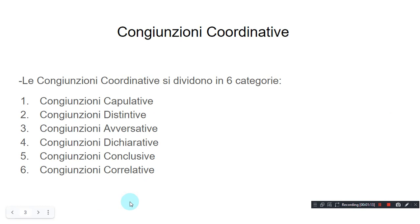Today we're going to be studying congiunzioni coordinative. Le congiunzioni coordinative si dividono in sei categorie: congiunzioni copulative, congiunzioni distintive, congiunzioni avversative, congiunzioni dichiarative, congiunzioni conclusive, congiunzioni correlative.